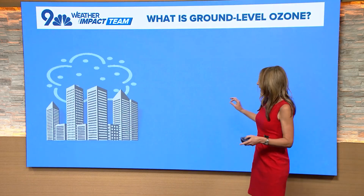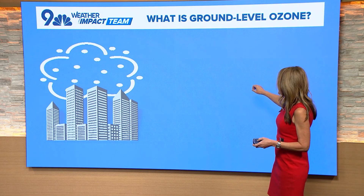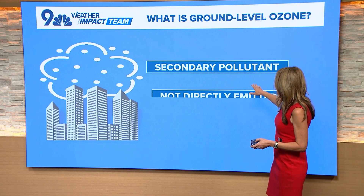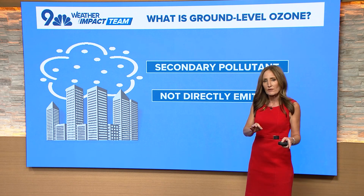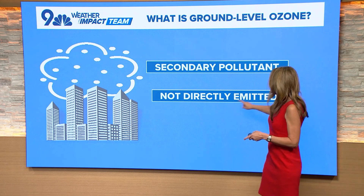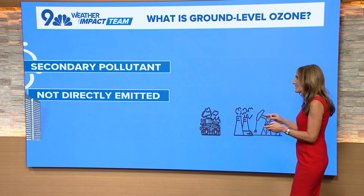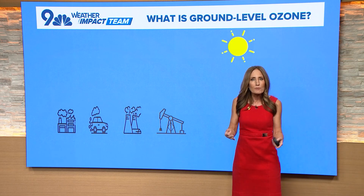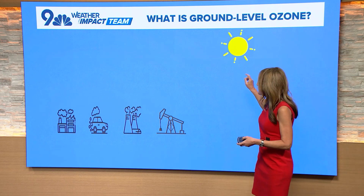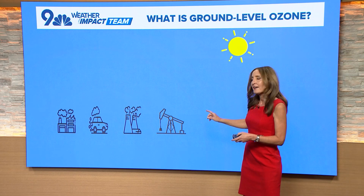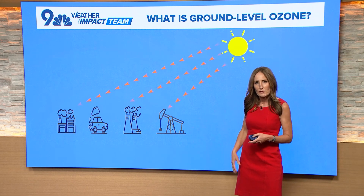Ozone is actually a secondary pollutant. It is not the primary pollutant but the secondary one — it is not directly emitted. Basically, it is a chemical reaction, an interaction with the sun and more common pollutants.